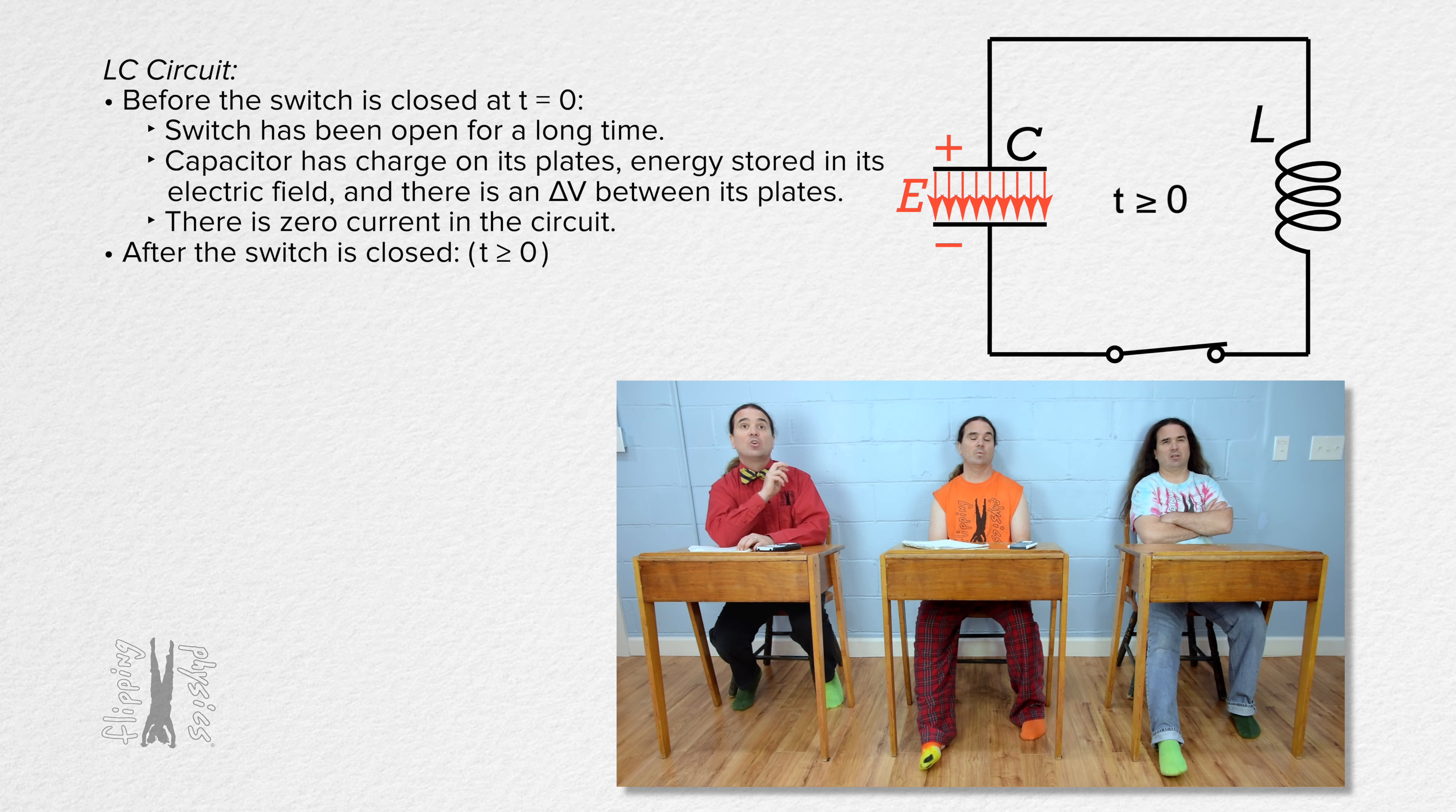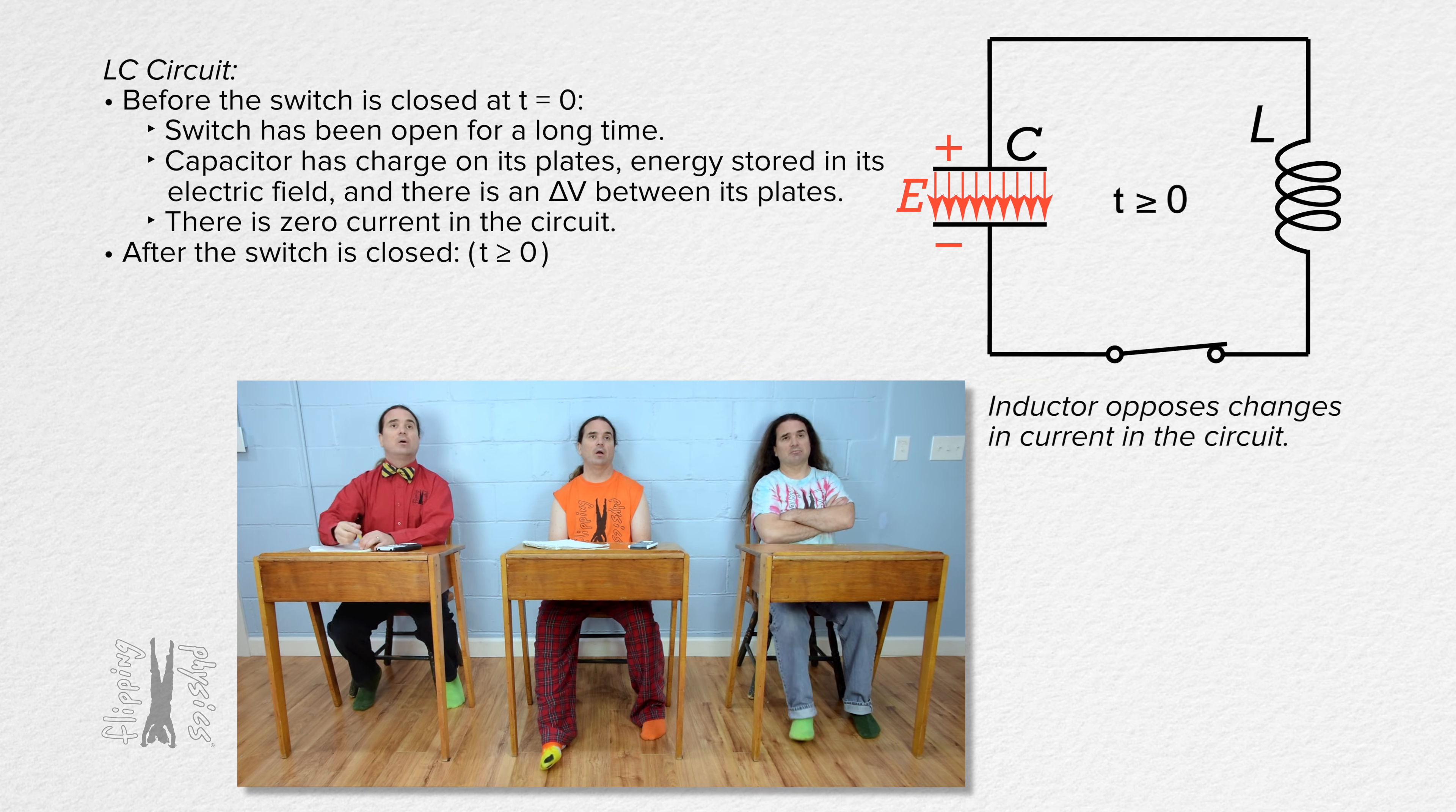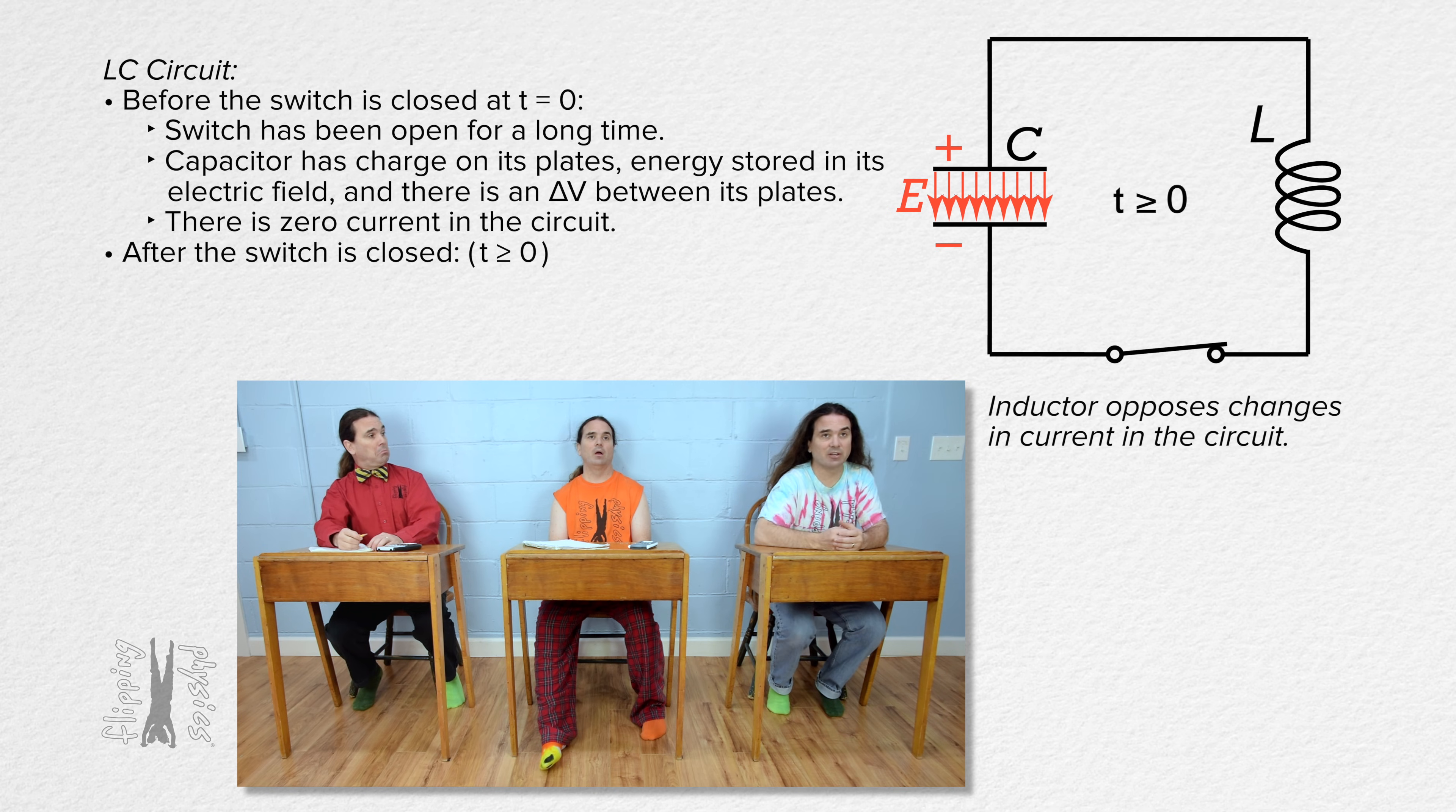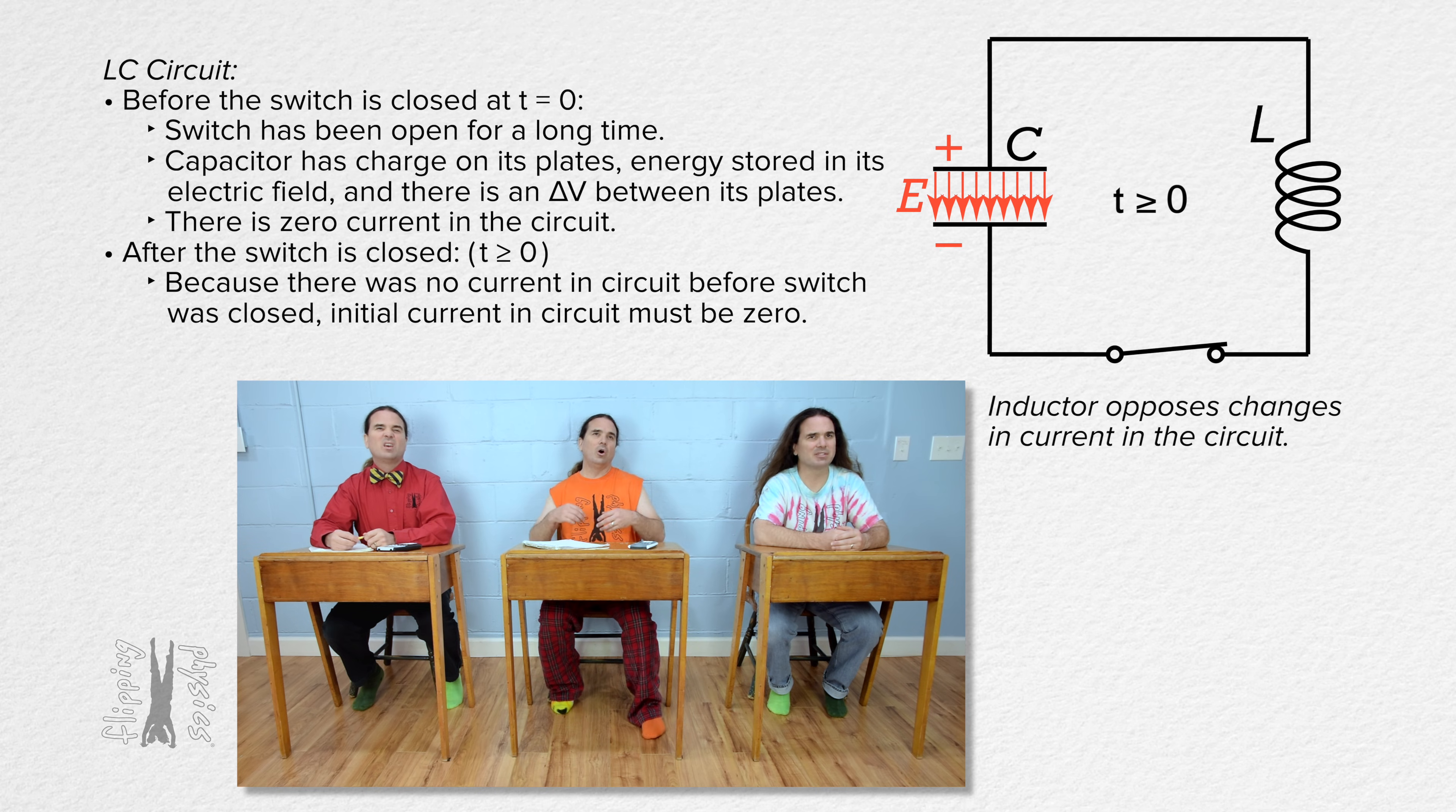After the switch is closed, the inductor opposes changes in current in the circuit. So because there was no current in the circuit before the switch is closed, right when the switch is closed, the current is initially zero. But then after time t equals zero, the current does increase, but I don't know what happens after that. Does it reach a steady state current like an inductor-resistor circuit?